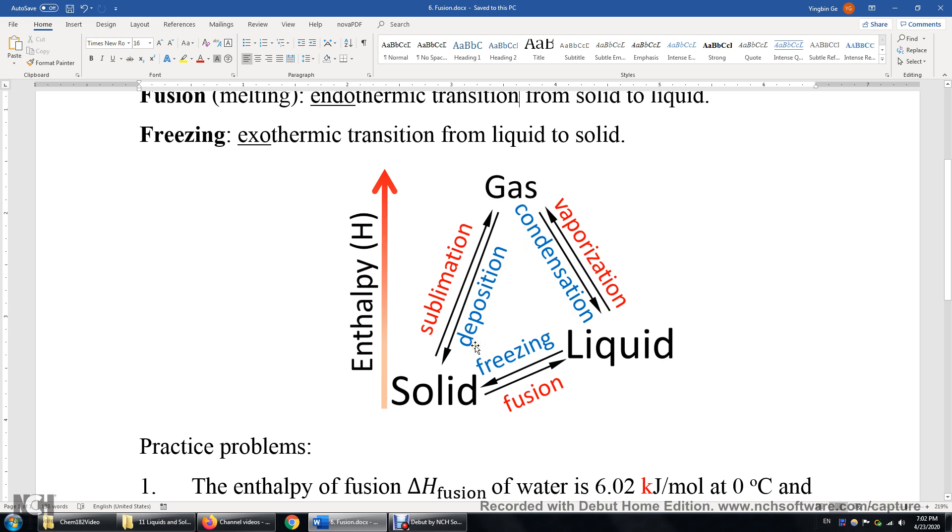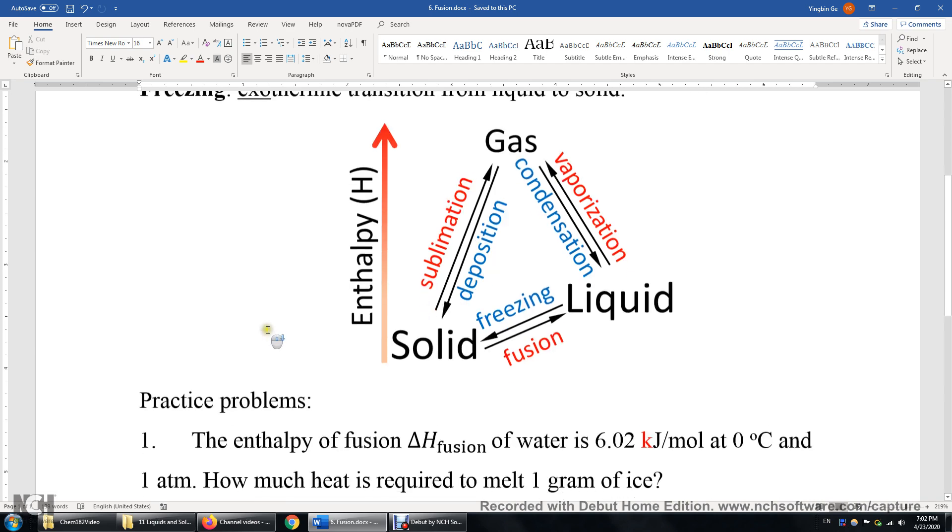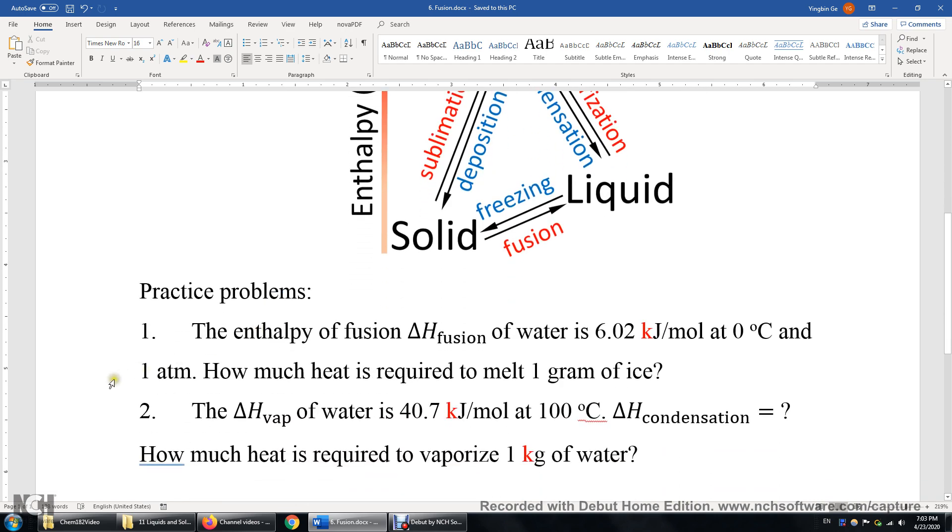Now I will talk about two practice problems. Number one, the enthalpy of fusion of water is 6.02 kJ per mole at this temperature and pressure. How much heat is required to melt one gram of ice? We're talking about the fusion of ice.